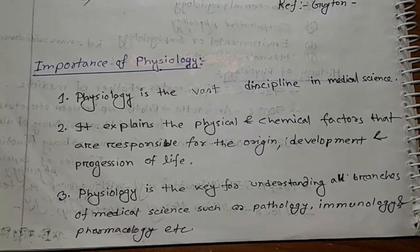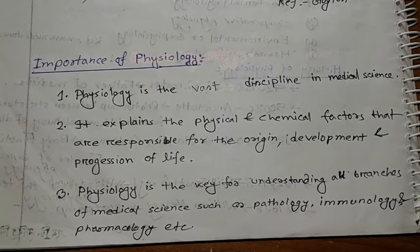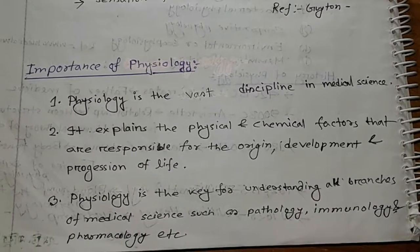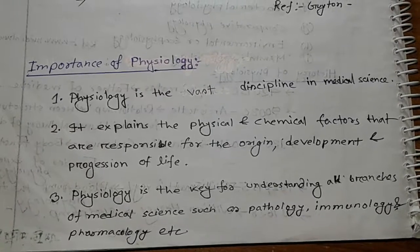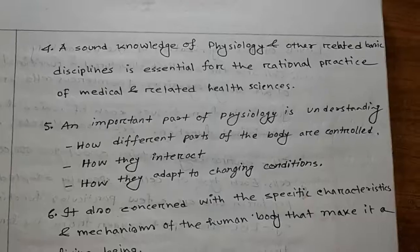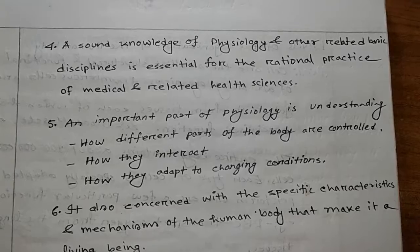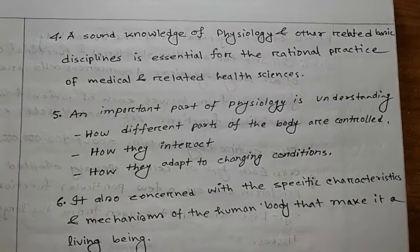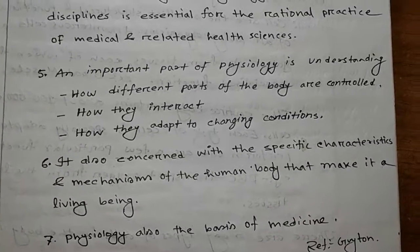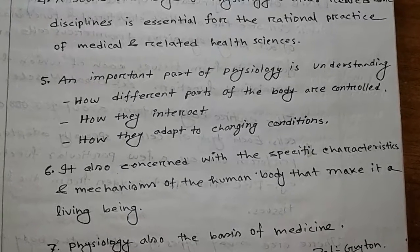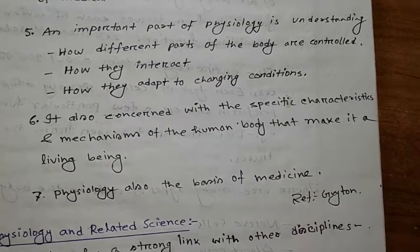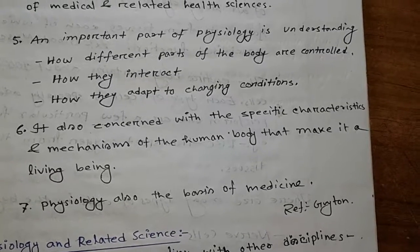Now, the importance of physiology. Physiology is a vast discipline in medical science. It explains the physical and chemical factors responsible for the origin, development and progression of life. Physiology is the key for understanding all branches of medical science, such as pathology, immunology, pharmacology, etc. A sound knowledge of physiology is essential for the rational practice of medical and related health sciences. An important role of the physiologist is understanding how different parts of the body are controlled, how they interact, and how they adapt to changing conditions.